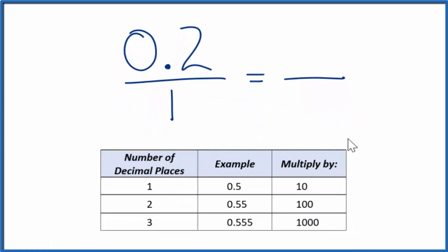We look at this table here. If we were to multiply 0.2, that's one decimal place, by 10, that would give us a whole number.